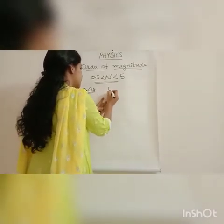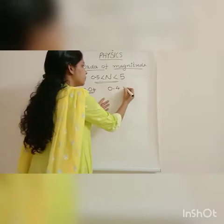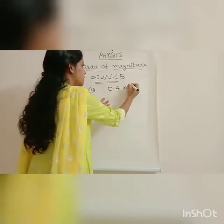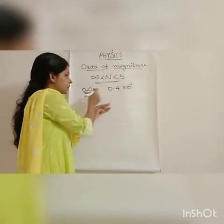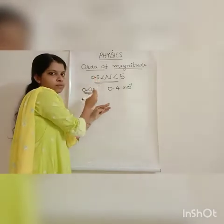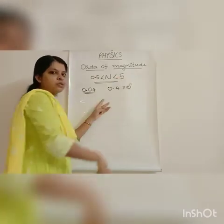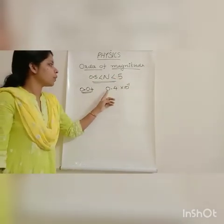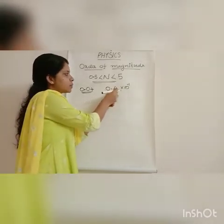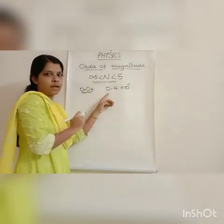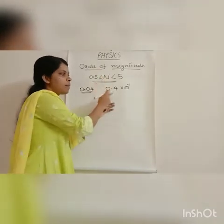In the first step, we can consider 0.4 into 10 raised to minus 1. But 0.4 is still less than 0.5, so we have to increase the magnitude again.